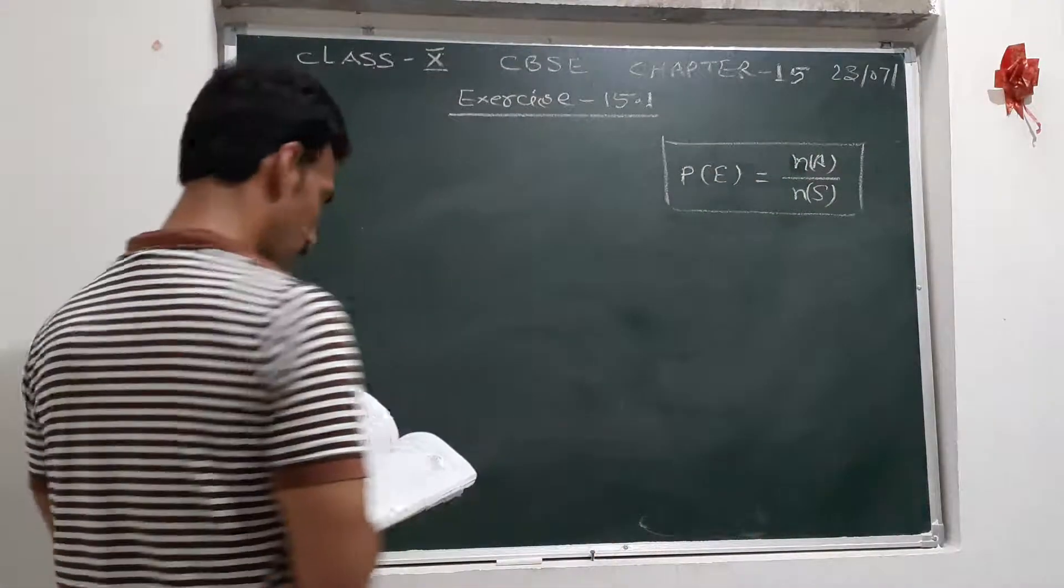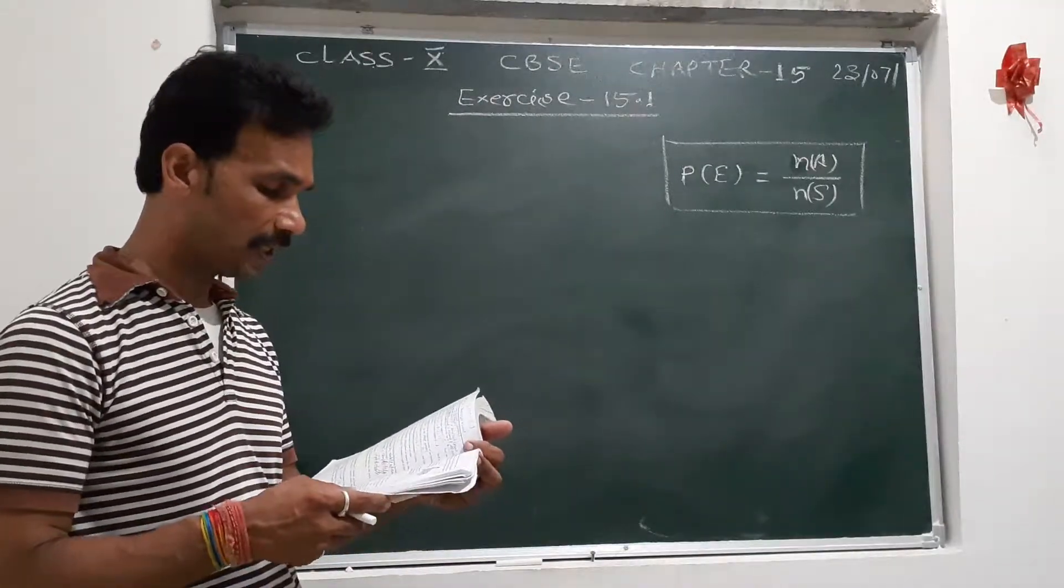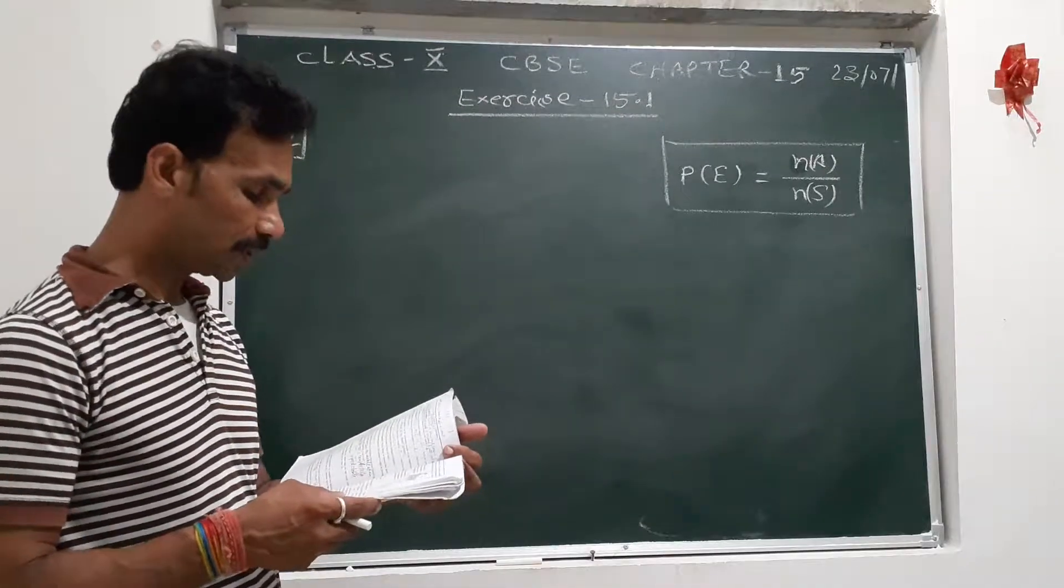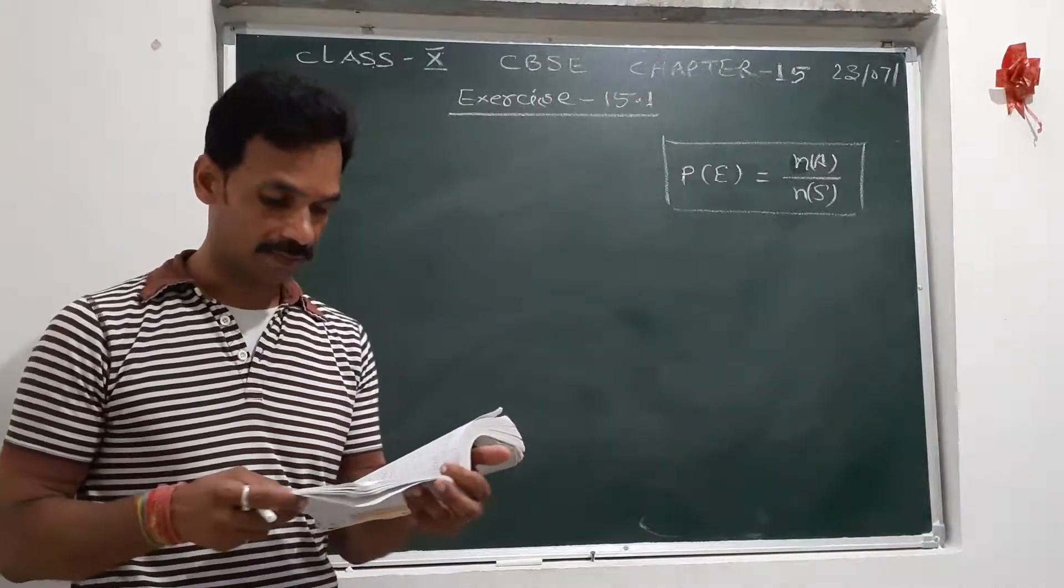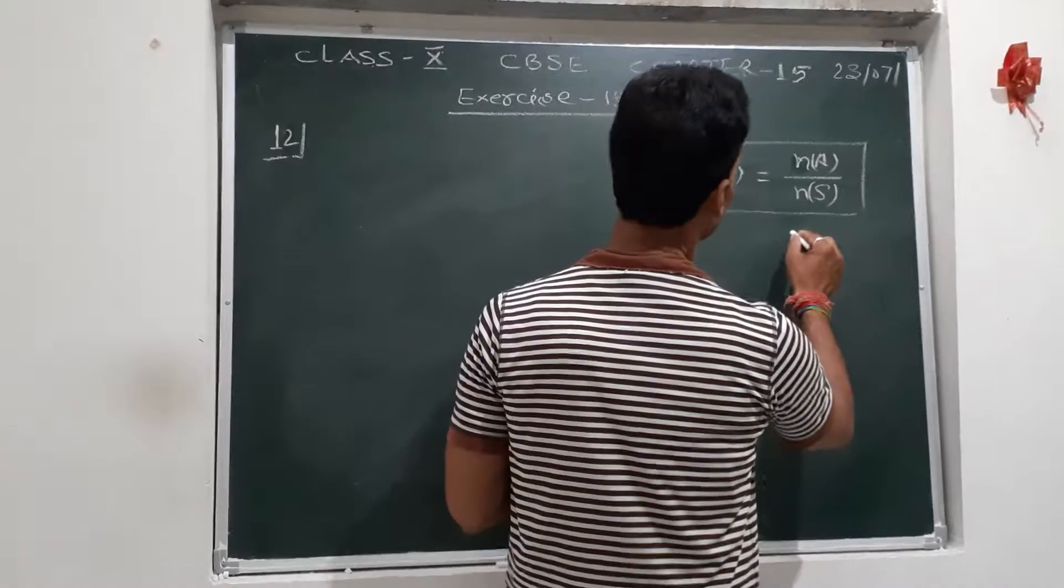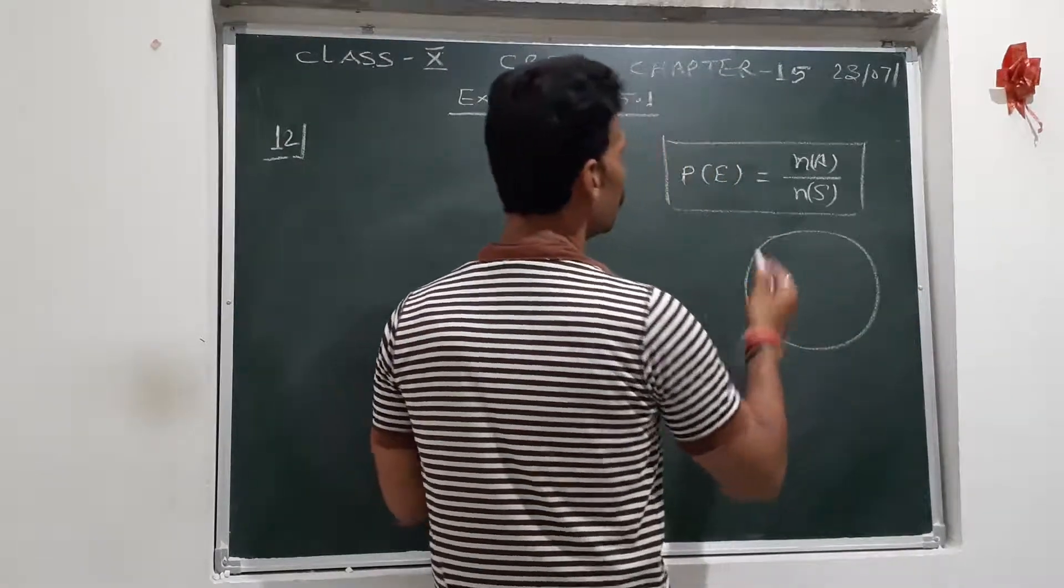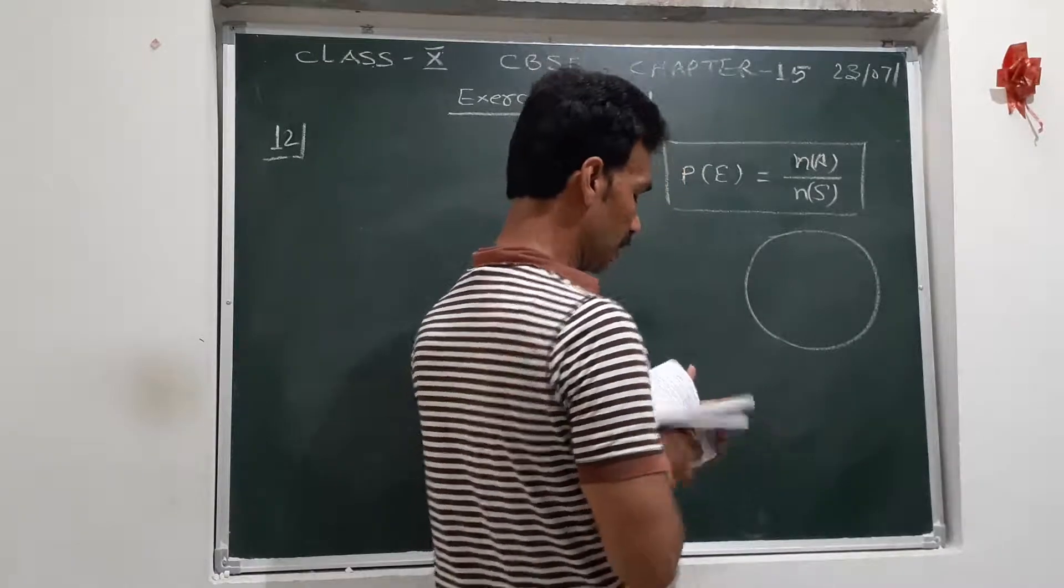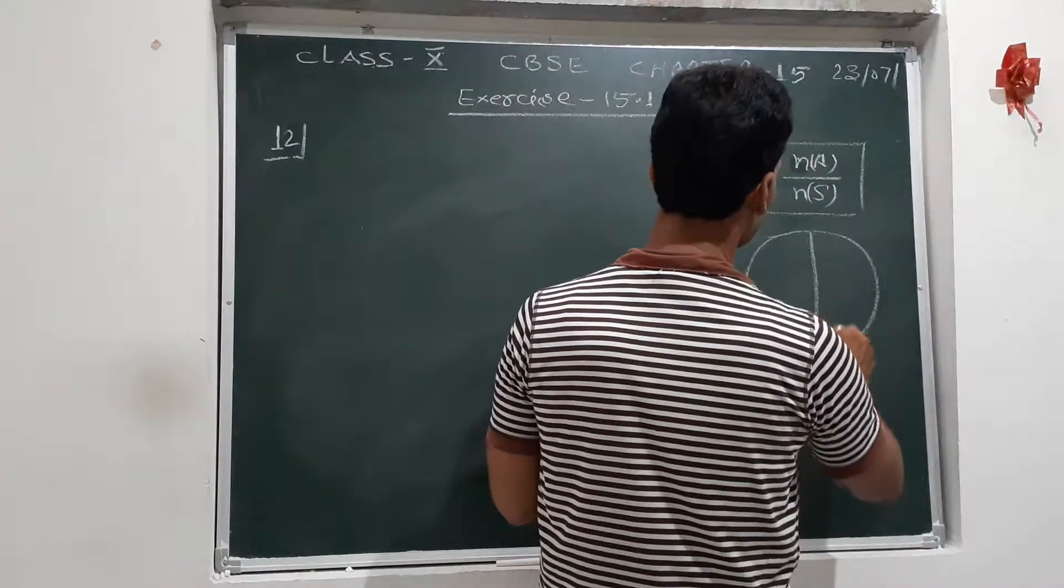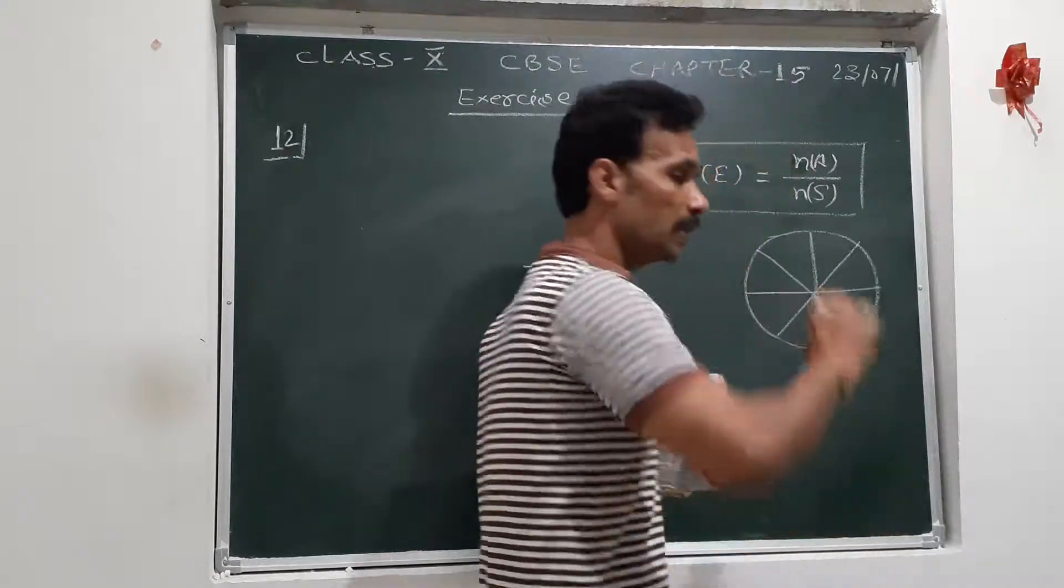Now question number 12: A game of chance consists of spinning an arrow which comes to rest pointing at one of the numbers. The spinning wheel has a total of eight equal parts.